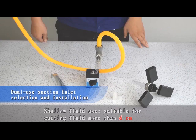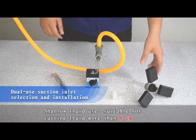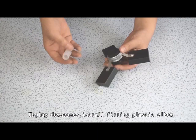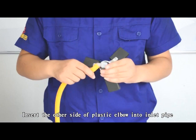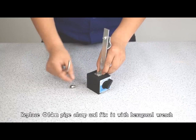Dual use suction inlet selection for shallow fluid use is suitable for cutting fluid more than 6cm. Unplug downcomer, install fitting plastic elbow, and insert the other side of plastic elbow into inlet pipe. Replace 14mm pipe clamp and fix it with wrench.